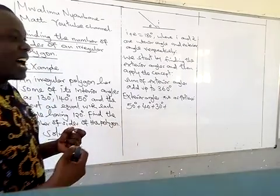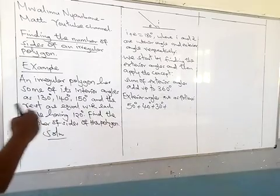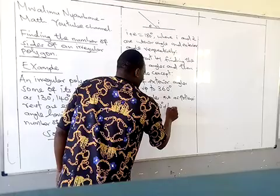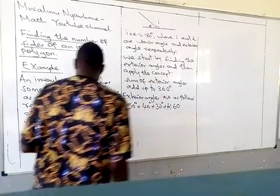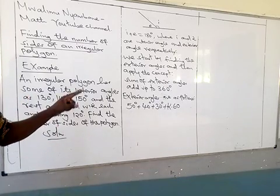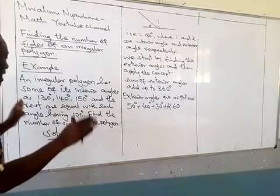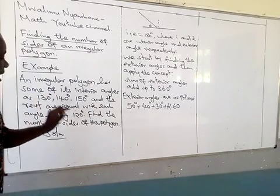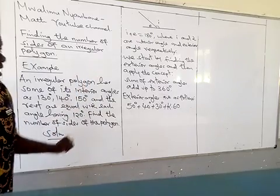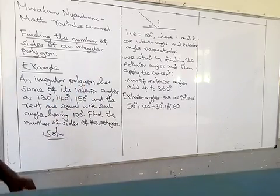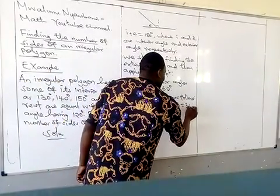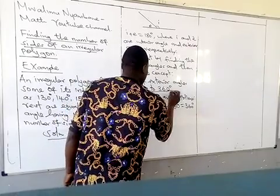So we will bring in a letter to stand for the number of those angles that we don't know, the number of angles that are 60 degrees as the exterior angles. That's what I wrote in K to stand for those number of angles. The sum of these exterior angles should give us 360 degrees.